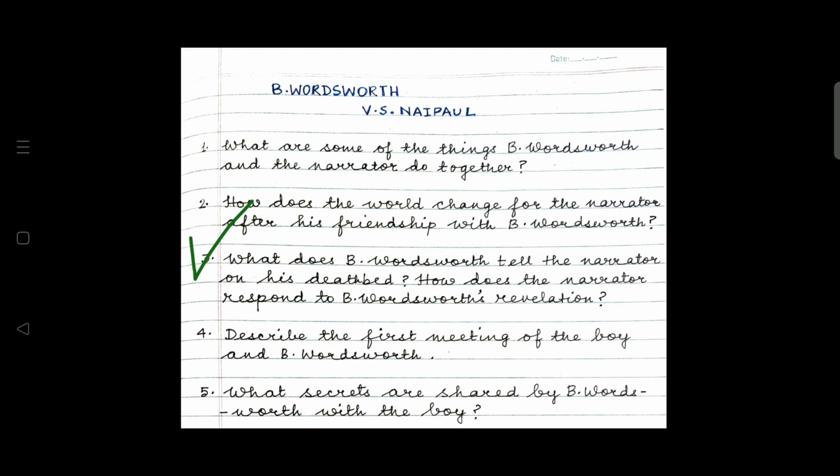Coming to question number two. How does the world change for the narrator after his friendship with B. Wordsworth? Again, the world became a most exciting place for the young narrator and he sought shelter, comfort, emotional support in B. Wordsworth. B. Wordsworth's accommodating nature served as a foil to his mother's strict and harsh nature.